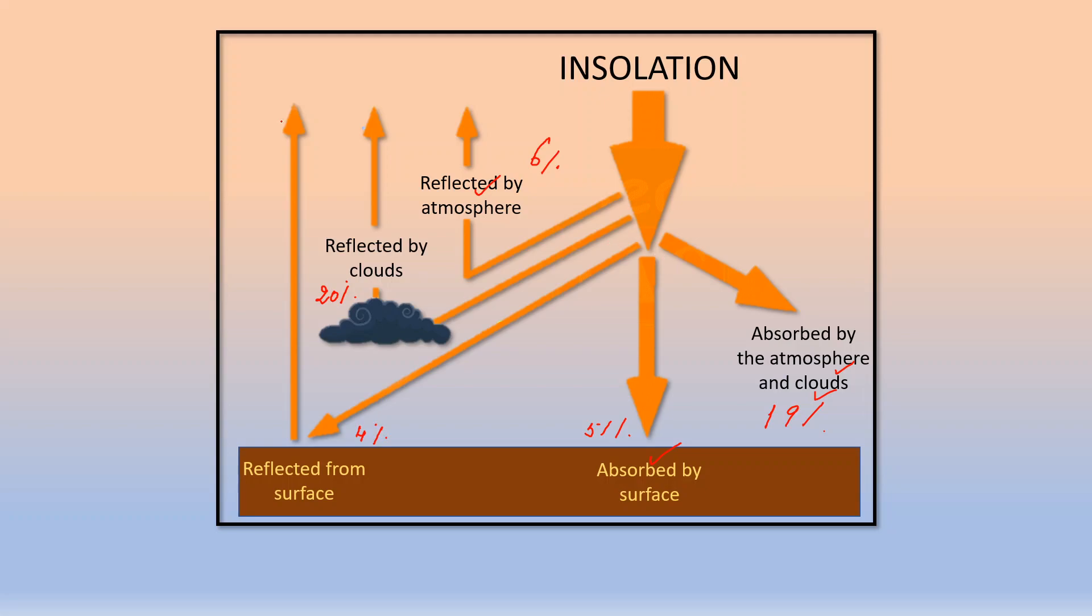Now when we sum up the amount of insolation reached by the earth that is 19, 51, 4, 20 plus 6 it comes to 100 units. So out of this 100 units, a huge amount of energy is actually getting reflected into space. So a very minuscule of energy is absorbed by the atmosphere and ultimately by the surface, but that is enough for the earth to maintain its life processes.